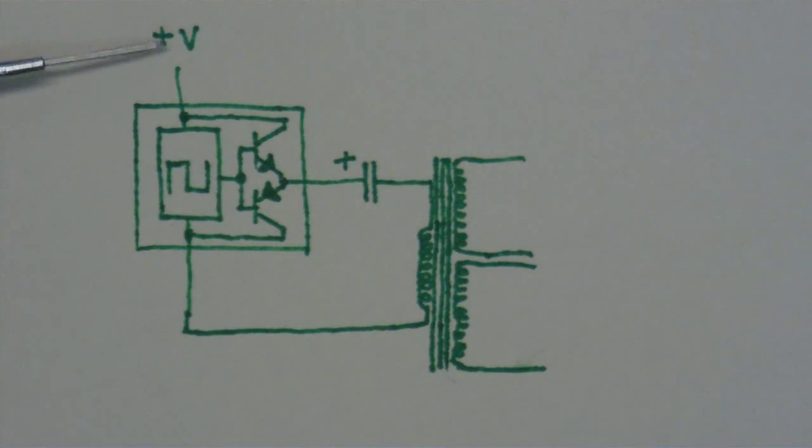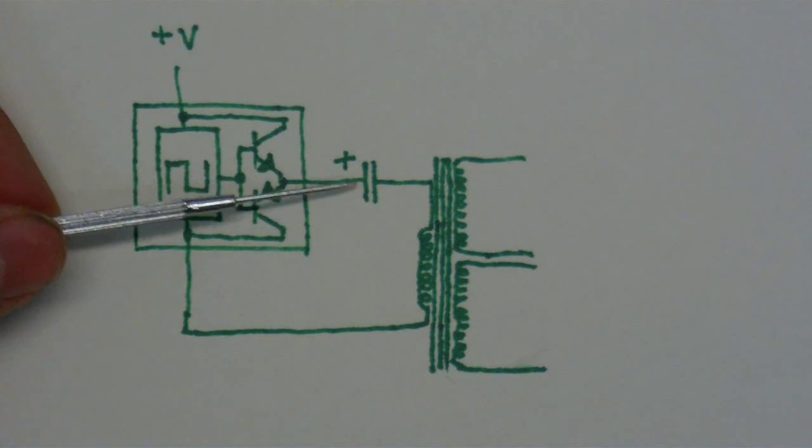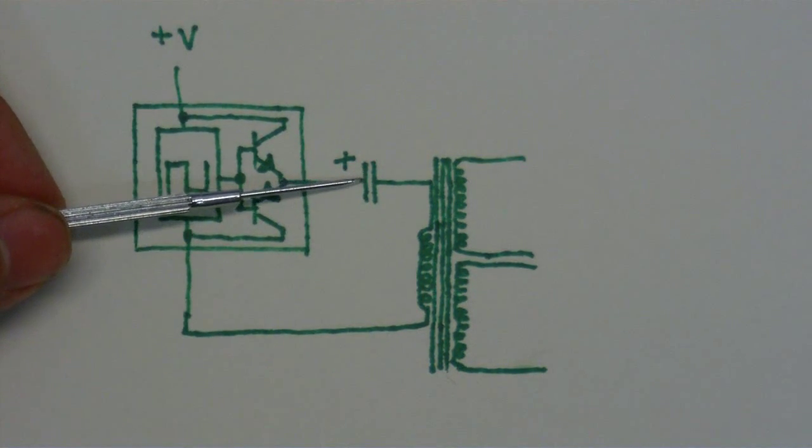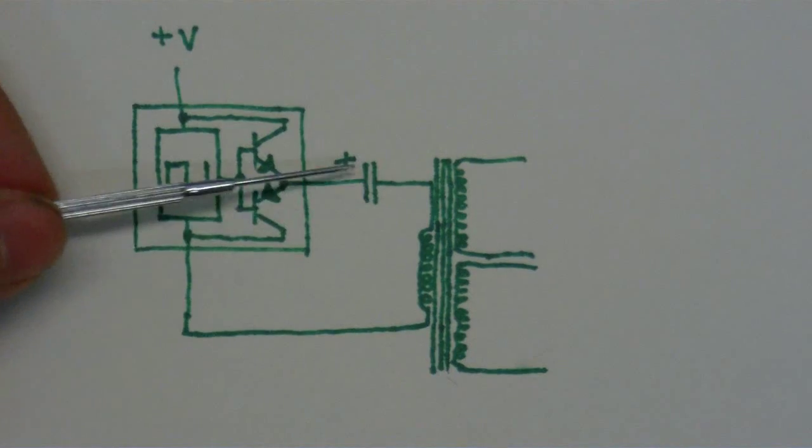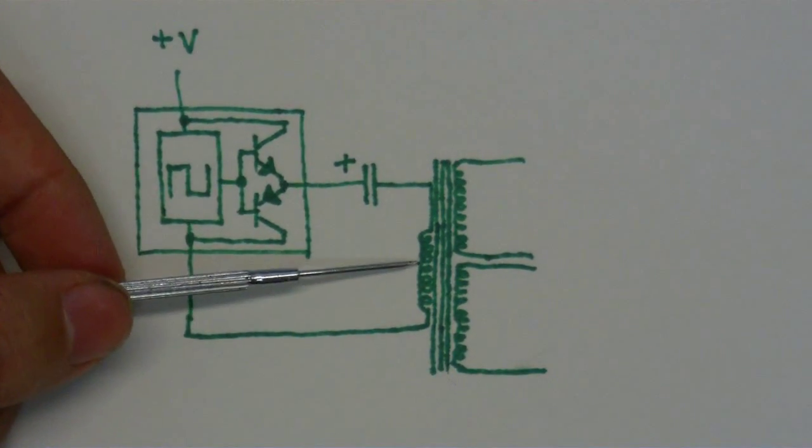So the power can go into the chip, through this transistor, and into this capacitor. And as it charges this capacitor, we get a pulse on the primary of the gate drive transformer.